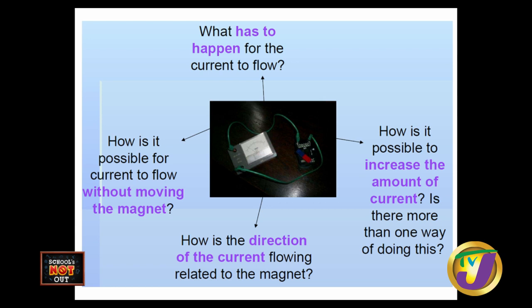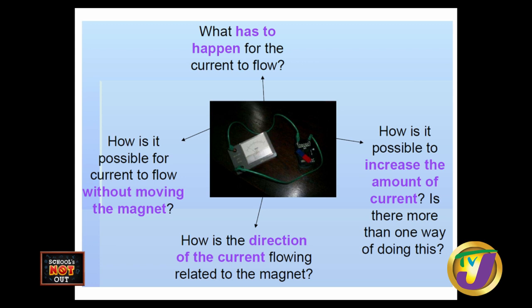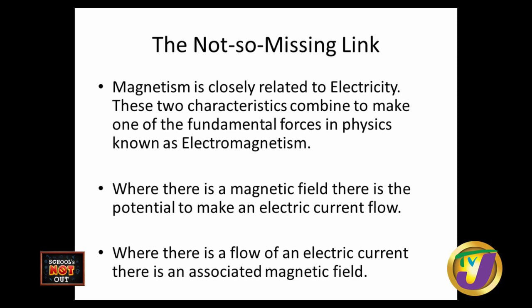We've looked at how a current affects the loop of a conducting wire — it generates a magnetic field. But how would that magnetic field affect a wire not carrying a current? Questions that are asked include: what has to happen for the current to flow? Is it possible to increase the current? How is it possible for the current to flow without the magnet moving? And how is the direction of the current flowing related to the magnet? Magnetism is closely related to electricity — these two combine to make one of the fundamental forces in physics known as electromagnetism. Where there's a magnetic field, there's a potential to make an electric current flow.